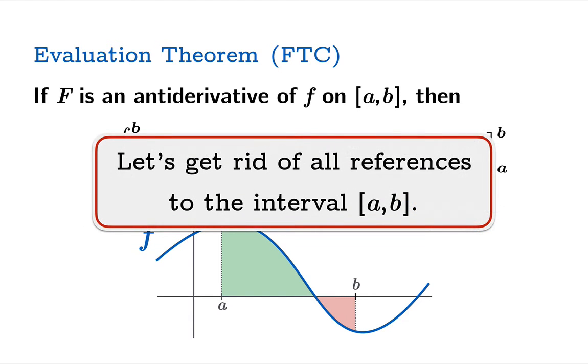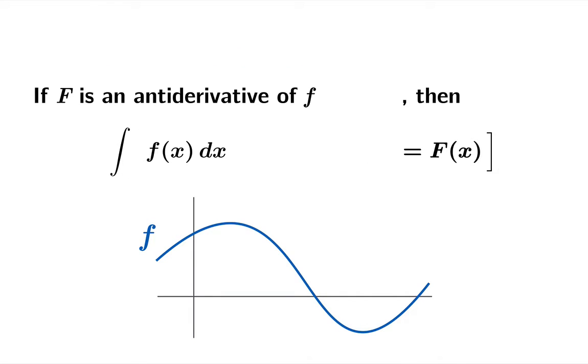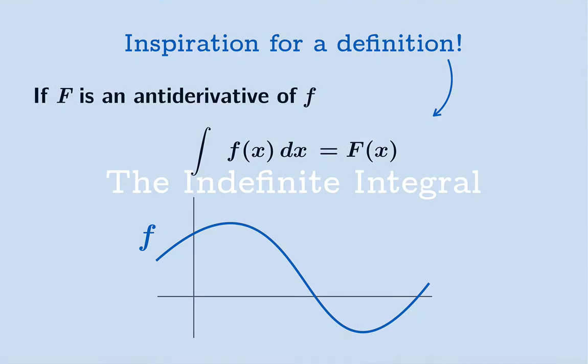Now just for fun, let's get rid of all references to the interval from a to b in this picture. Just watch what you get if you literally take away all references to the interval, you get a statement that looks like this. If F is an antiderivative of f, then this symbol equals the antiderivative. We're going to use this as an inspiration for a definition.